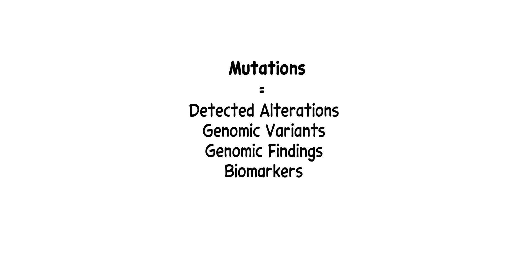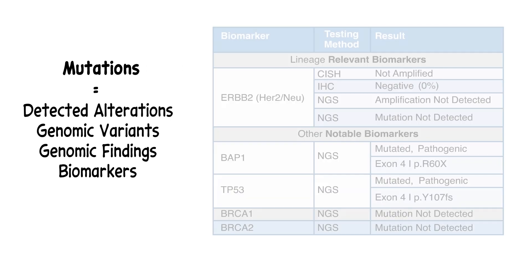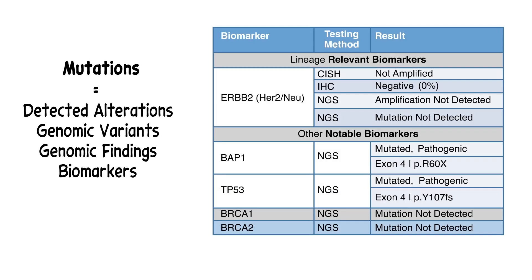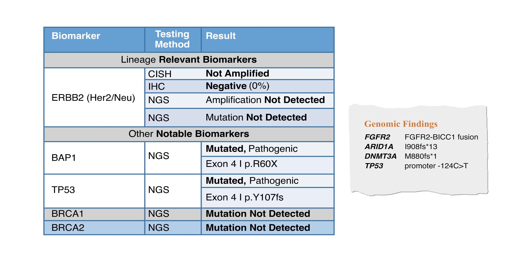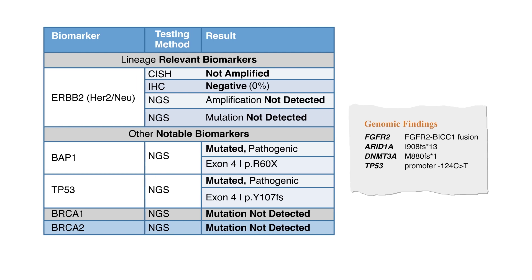Within the summary, you'll find any gene mutations. Some labs list all the most important genes that were tested together with their result — positive or negative. Other labs list only the genes that have mutations. Based on your specific mutations, any targeted therapies that may be appropriate for you will be noted somewhere on the summary page.